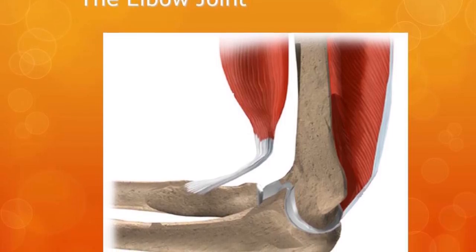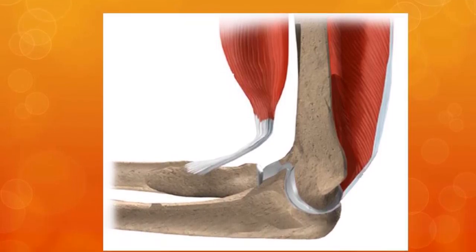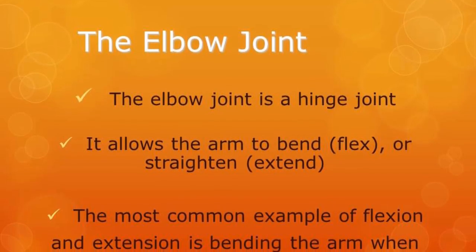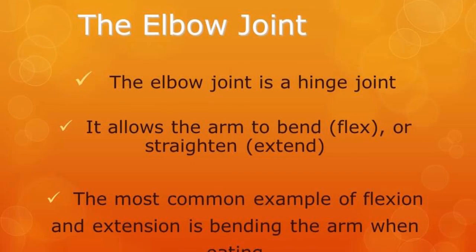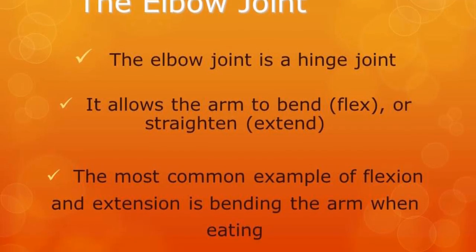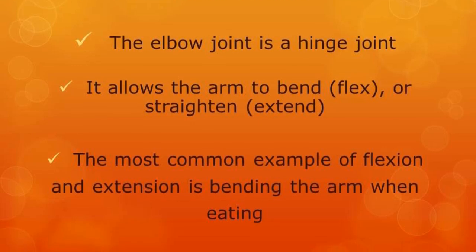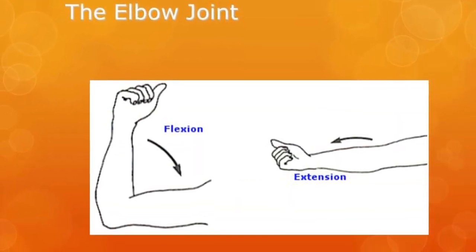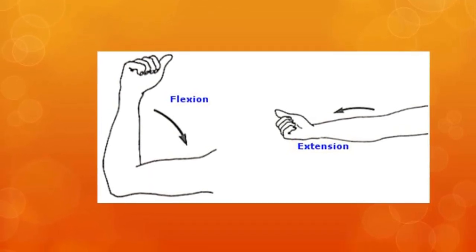Like a door that can only go two ways — open or close — an elbow can only go two ways. Therefore, you can only straighten or bend your arm, which is known as flexion and extension. The most common example is when you're eating — you bring your arm up and then down. Other examples include a bicep curl or tricep dips, and many other sporting activities also demonstrate this.